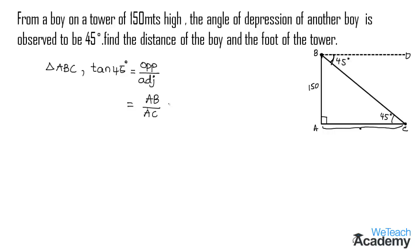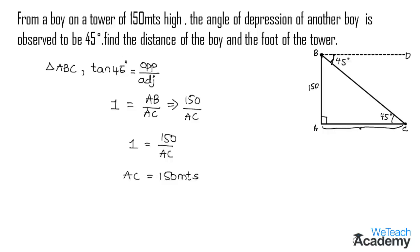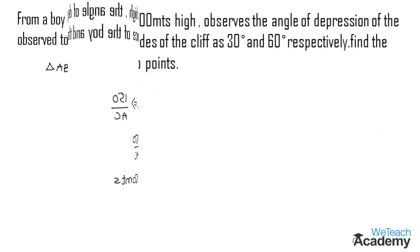We already know the value of AB, so substituting we get 150 by AC, which we equate to the value of tan 45, which is 1. So we get 1 equal to 150 by AC, which implies AC is equal to 150 meters — the distance of the boy from the foot of the tower. Now let us proceed and discuss one more example.